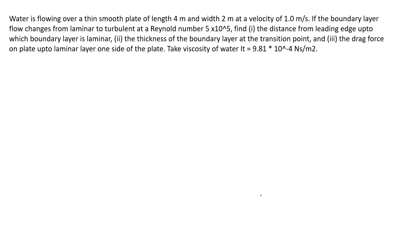This is another problem based on Blasius' solution. Water is flowing over a thin smooth plate of length 4 m and width 2 m at a velocity of 1 m/s. If the boundary layer flow changes from laminar to turbulent at a Reynolds number of 5×10^5, find the distance from the leading edge up to which the boundary layer is laminar, the thickness of the boundary layer at the transition point, and the drag force on the plate up to the laminar layer on one side. Take viscosity of water as 9.81×10^-4.